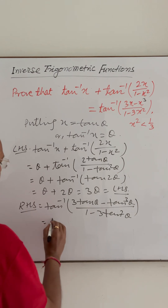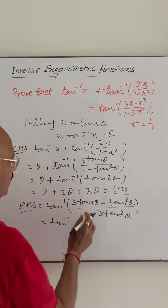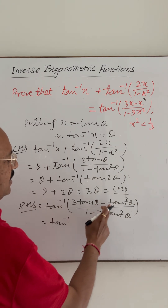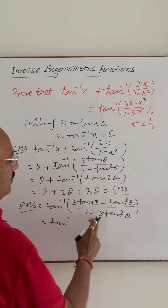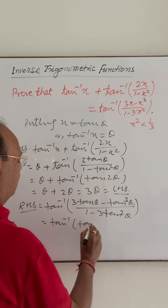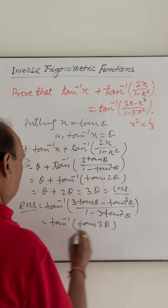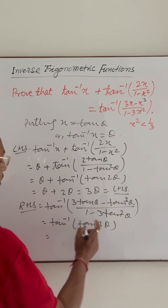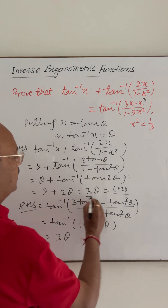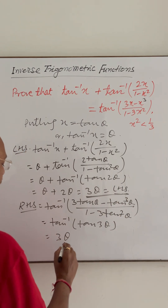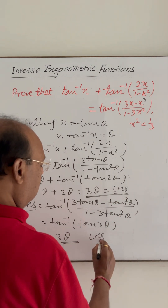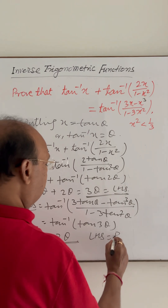This expression equals tan 3 theta, since 3 tan theta minus tan cube theta upon 1 minus 3 tan square theta is the formula for tan of 3 theta. Therefore tan inverse of tan 3 theta equals 3 theta. Since LHS equals 3 theta and RHS equals 3 theta, LHS equals RHS, and the identity has been proved.